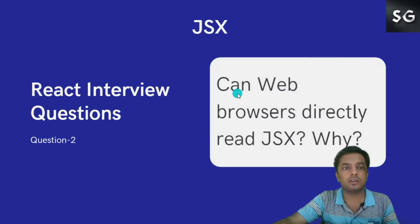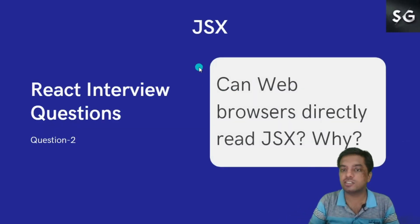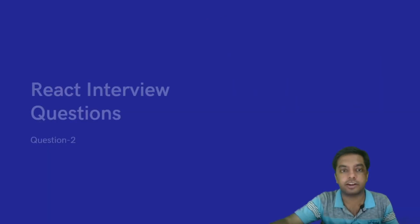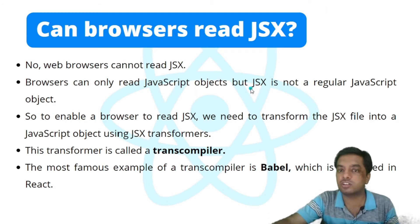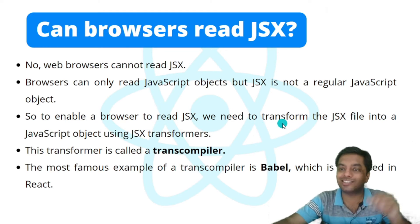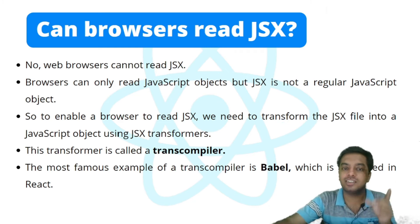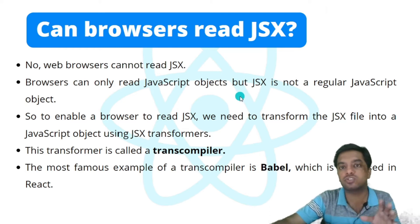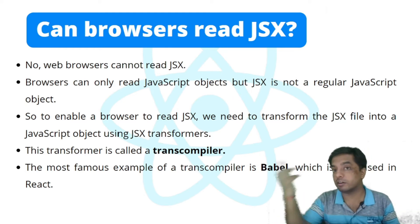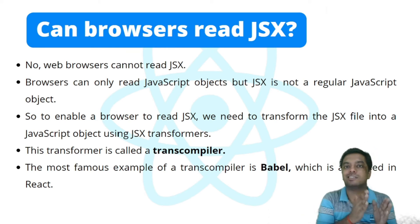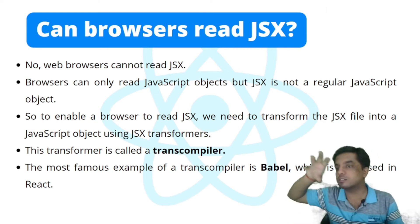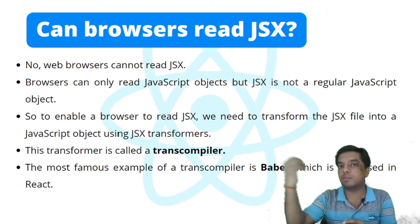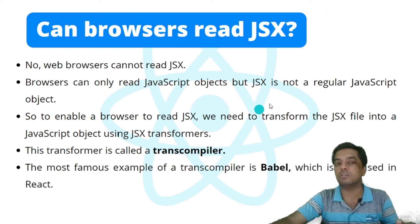The next question is: can web browsers directly read JSX? The answer is no. Browsers can only read JavaScript objects, but JSX is not a regular JavaScript object. To enable a browser to read JSX, we need to transform the JSX file into a JavaScript object using JSX transformers. JSX is converted into a JavaScript-readable object, and that JavaScript is then read by the browser to update what we see on screen.